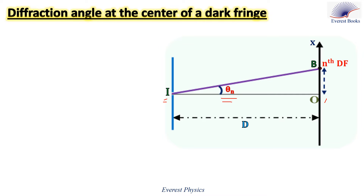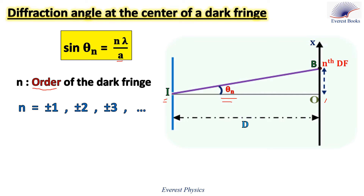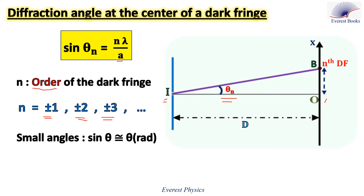The expression of sine theta n is n*lambda over a, where lambda is the wavelength of the incident laser beam, a is the width of the narrow slit, both measured in meters in SI units, and n is the order of the dark fringe — an integer that can be plus or minus 1, 2, 3, etc. If the diffraction angles are small, then sine theta is approximately equal to theta, where theta is measured in radians. Replacing sine theta n by theta n, we get theta n equals n*lambda over a.